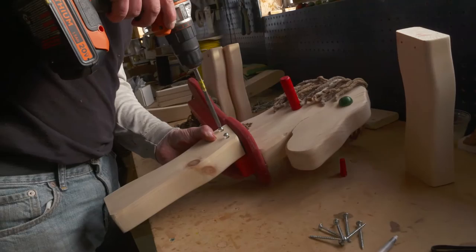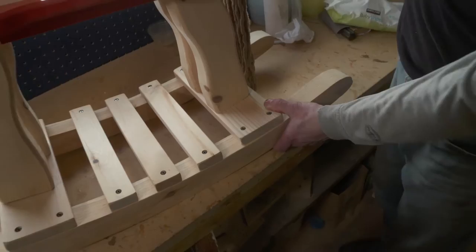The legs, which have been pre-drilled, are screwed into place. First on one side, then the other. The rockers and rungs are screwed into place and then attached to the body of the horse. This rocking horse is now ready to be enjoyed for generations.